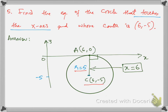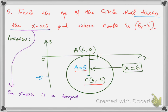Question number 5: find the equation of the circle that touches the x-axis. A circle which touches the x-axis means the x-axis is a tangent to the circle. This statement means the x-axis is a tangent to the circle. Since the y-coordinate of the center is negative — because of the minus 5 — that means the circle is below the x-axis.